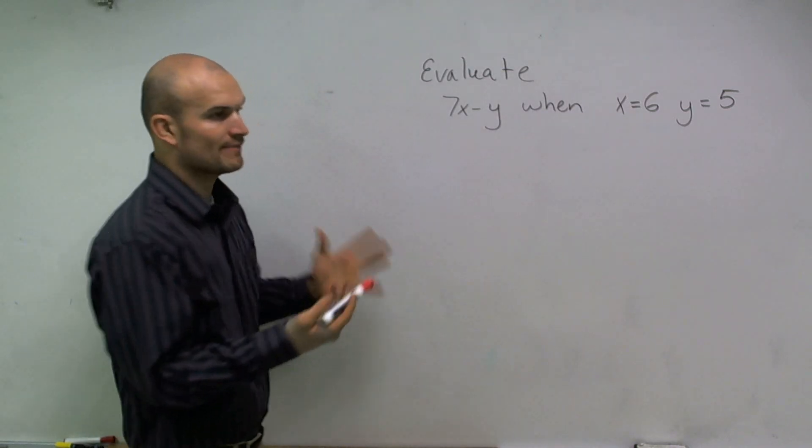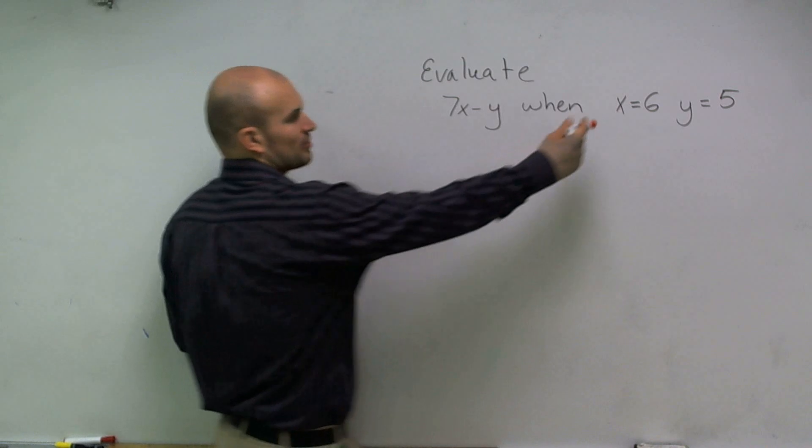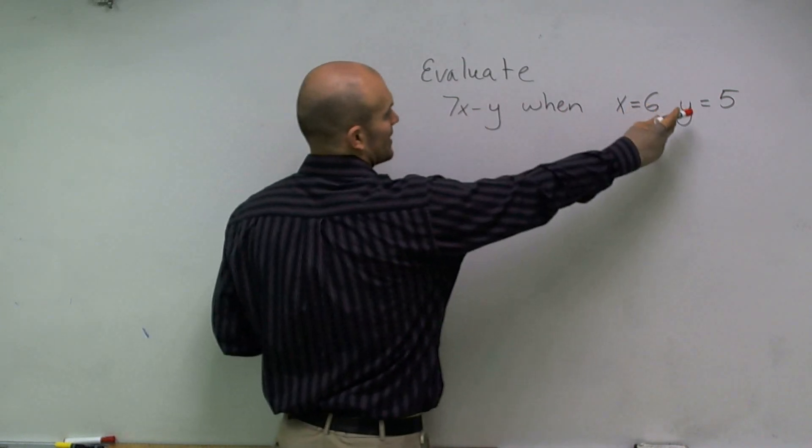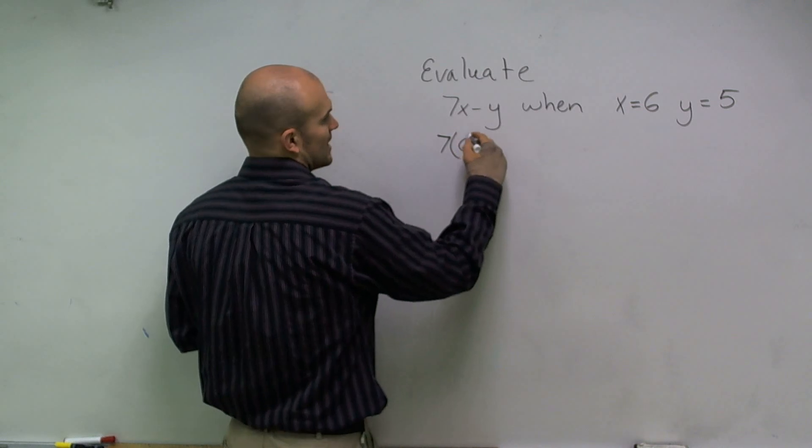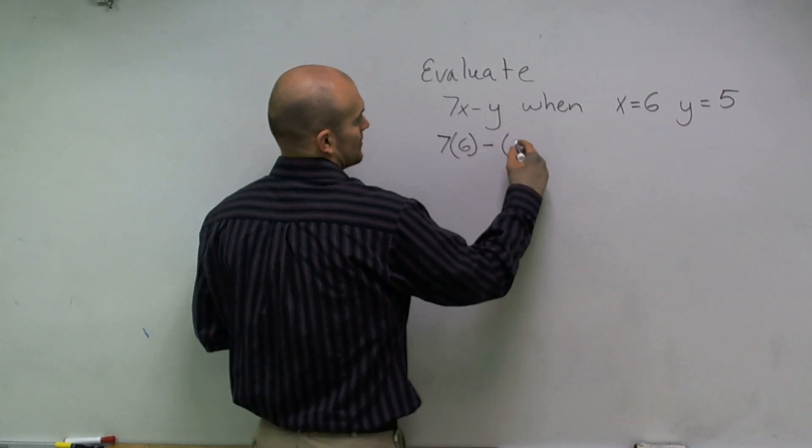I'm going to evaluate and find the value of this expression by plugging in 6 for x and 5 for y. So I'll write 7 times 6 minus 5.